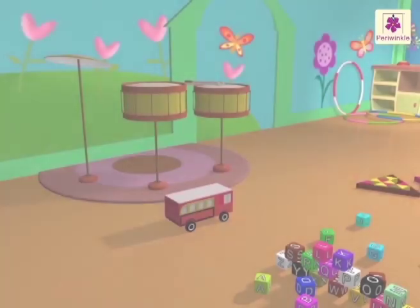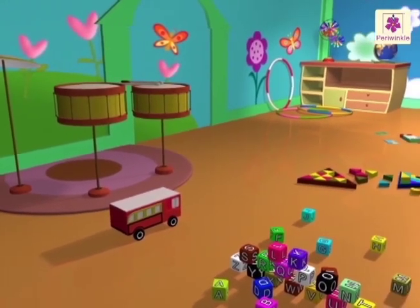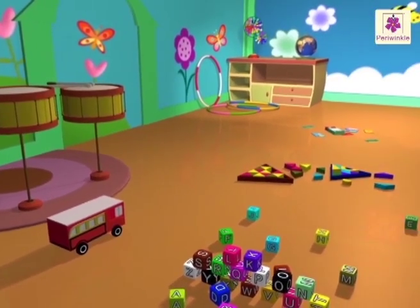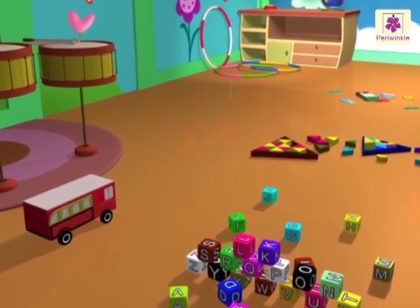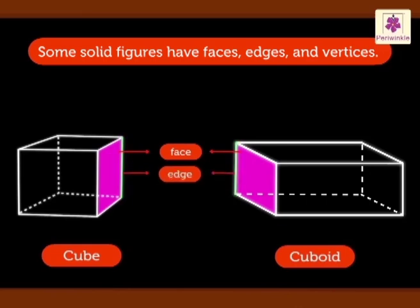Let's learn about solid figures in this toy room. Some solid figures, like a cube and a cuboid, have flat surfaces. A flat surface surrounded by line segments is called a face of the solid figure. Two faces meet at a line segment called an edge. Three or more edges meet at a vertex.